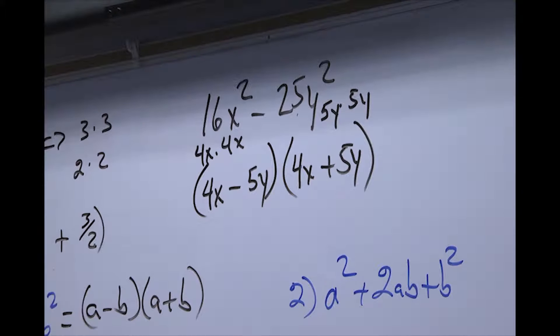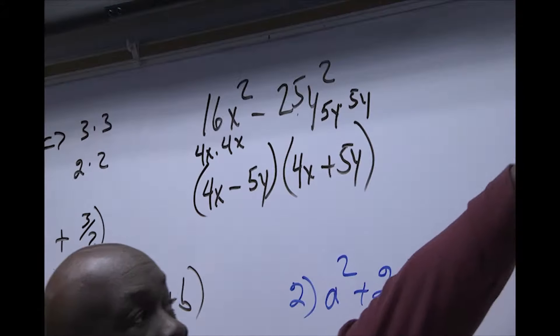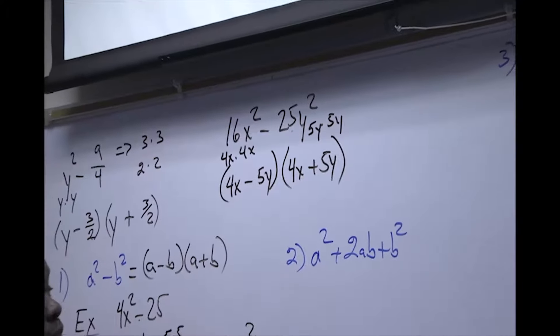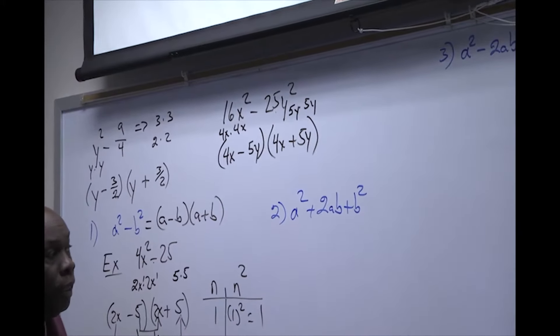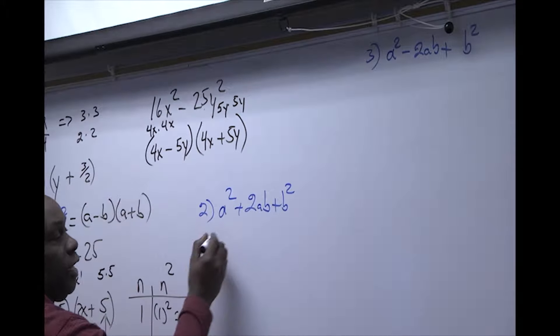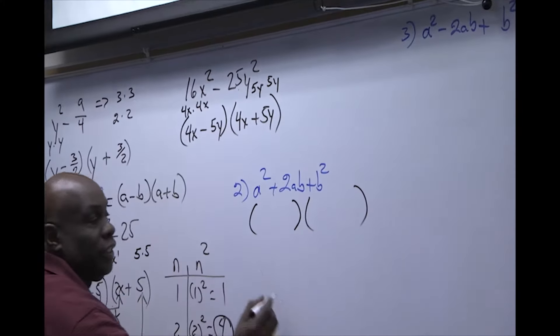Now, let's continue with trinomials. Trinomials, we have two of them. One being positive and also one being negative in the middle. This is a perfect square and this is also a perfect square. So when you factor these things, you should get two sets of parentheses.